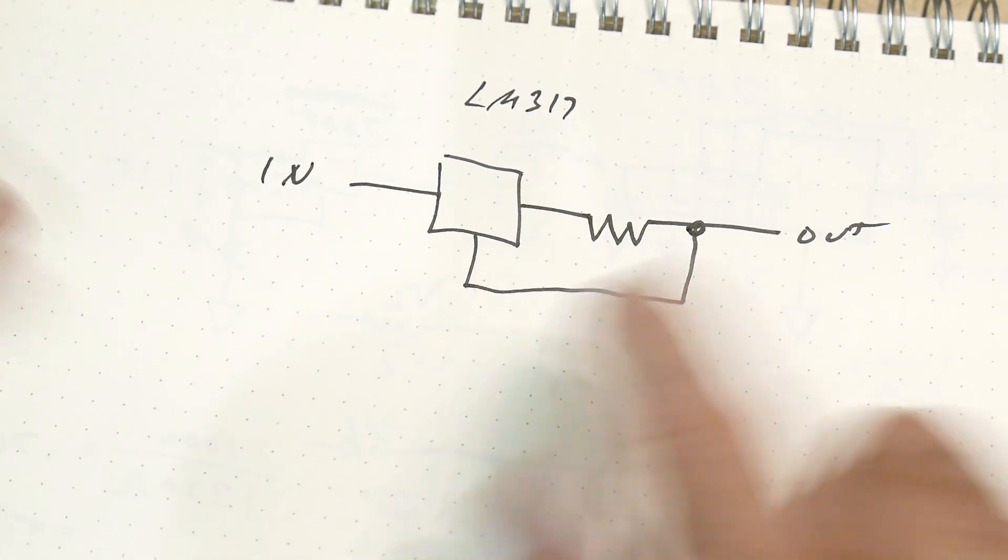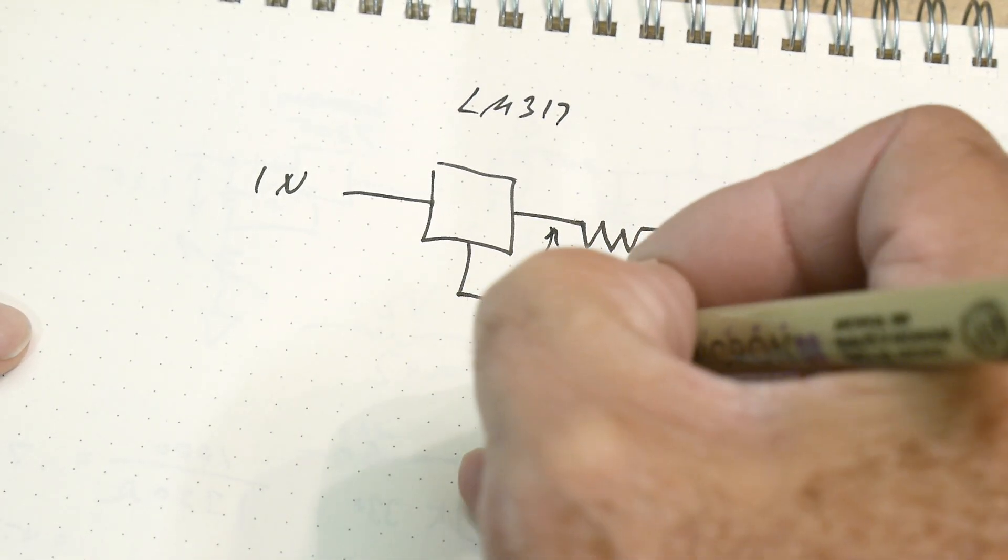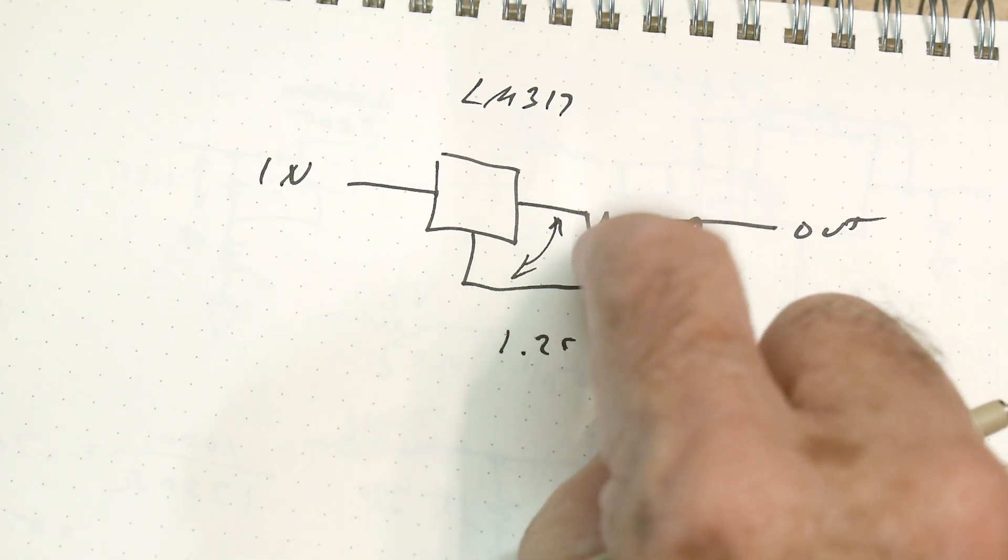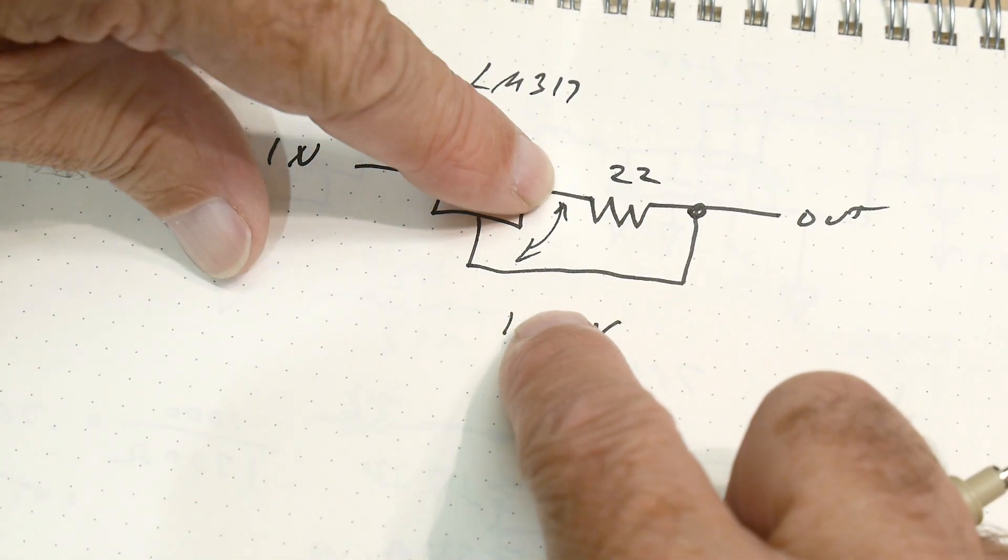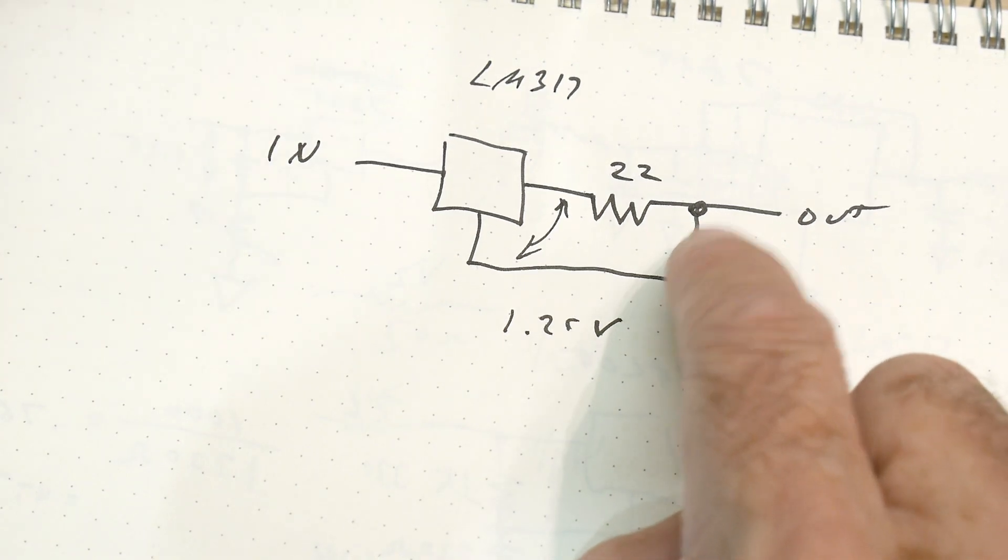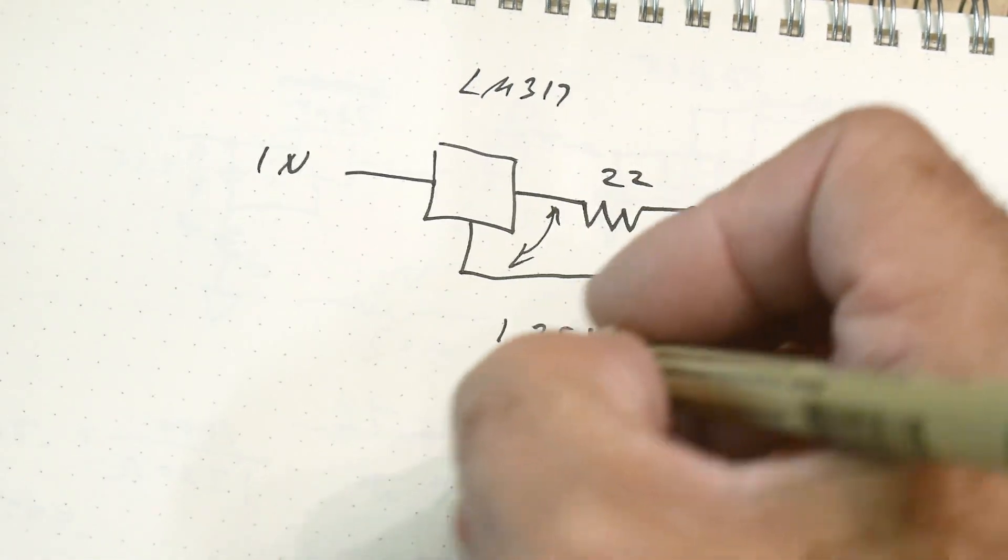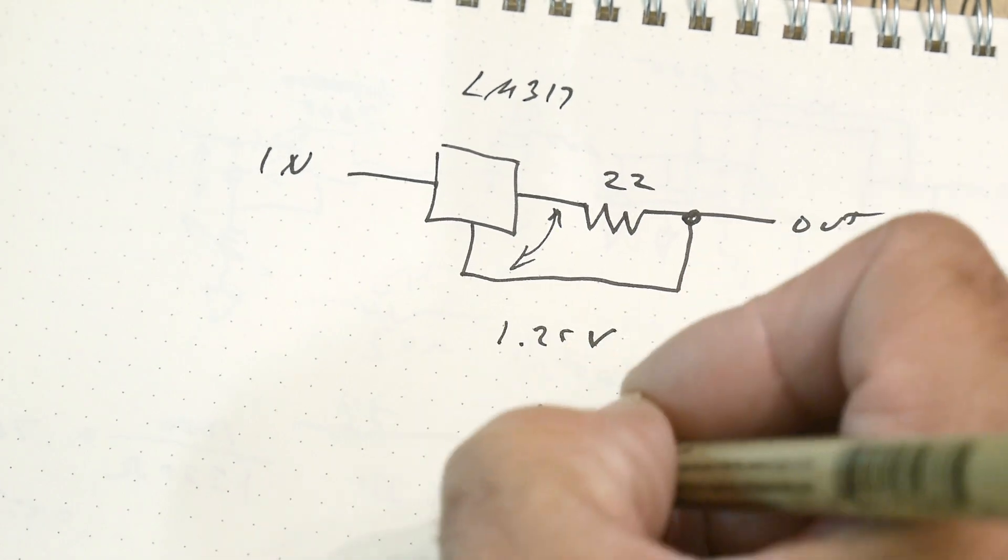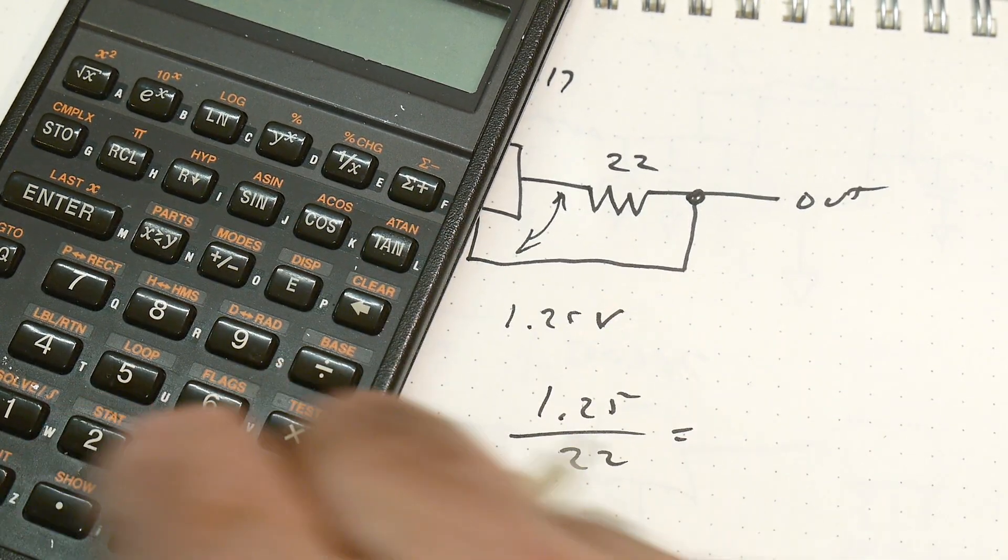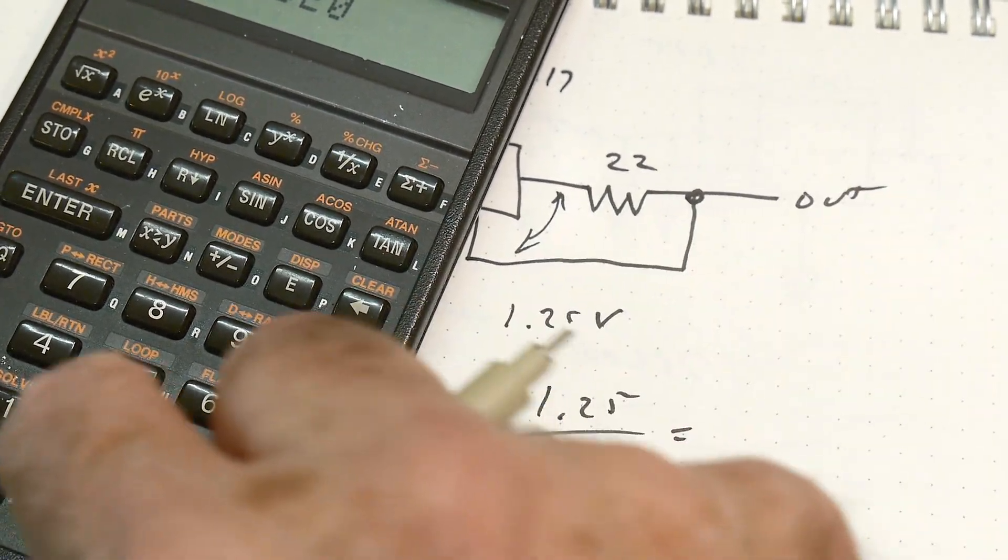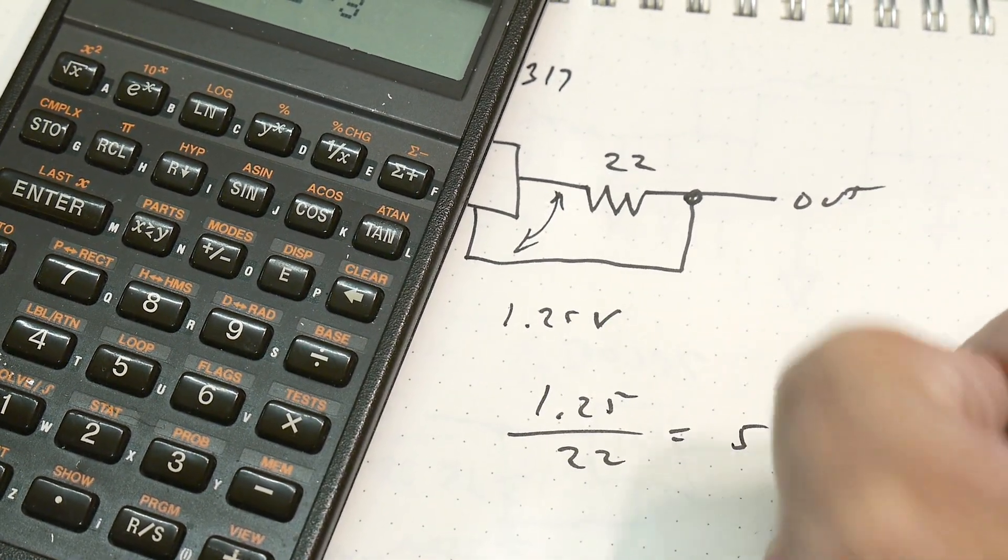What does that do? Well, the LM317 looks at these two voltages and it has 1.25 volts there. Now we're going to put a resistor here. We're going to put a 22 ohm resistor here. So that means that we're going to have this is here to here. So we have 1.25 across 22 ohms. 1.25, 22 ohms. We're going to have 56 milliamps.